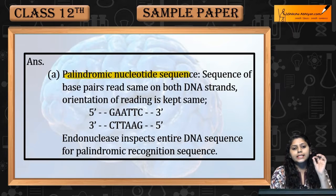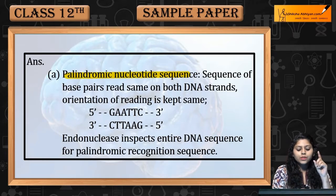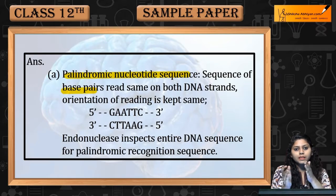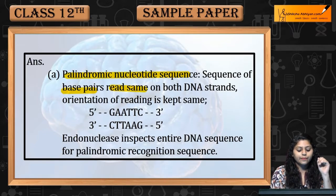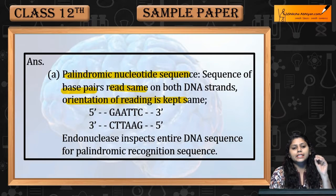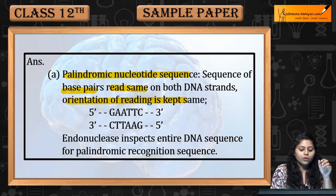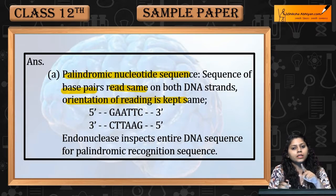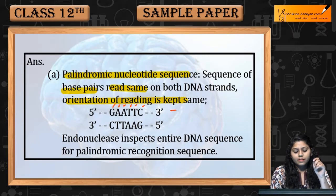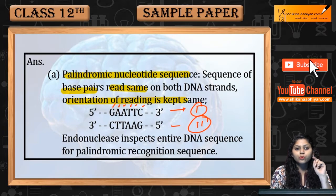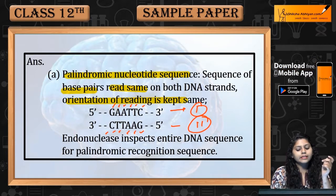What is a palindromic nucleotide sequence? When we read the sequence of base pairs, they read the same on both strands of DNA. The orientation of reading is kept the same. If we read in the 5' to 3' orientation, the first strand reads G-A-A-T-T-C, and the complementary strand also reads G-A-A-T-T-C — it is the same sequence.